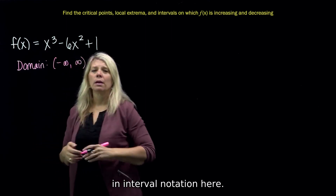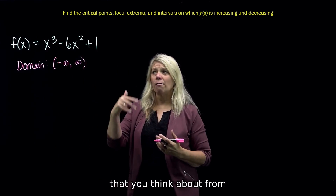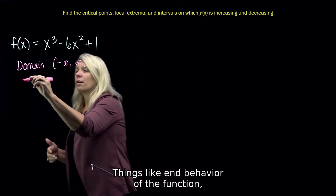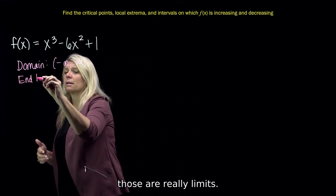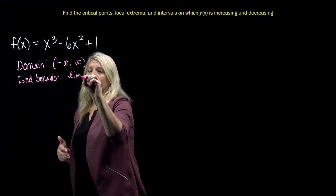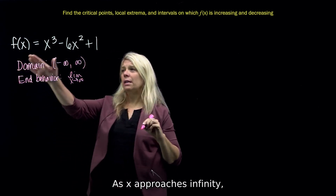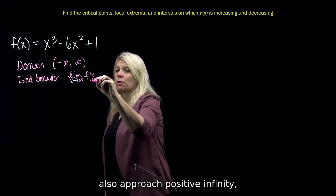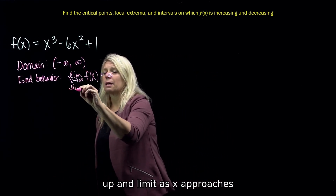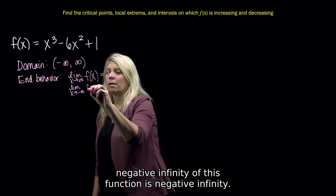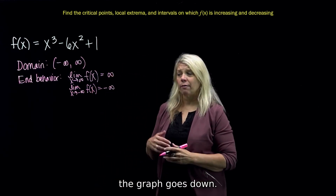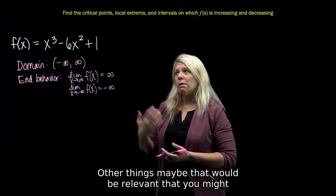There might be other things to think about from the original function before you start on the derivative, like end behavior. As X approaches positive infinity, the outputs also approach positive infinity, so the right-hand side of the graph goes up. And as X approaches negative infinity, the function approaches negative infinity, so the left end of the graph goes down.